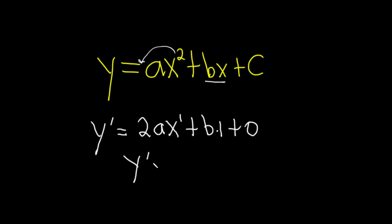So y prime is equal to 2ax. We don't have to write the 1. Plus b times 1 is b, and the 0 goes away. And that would be the derivative of the function.